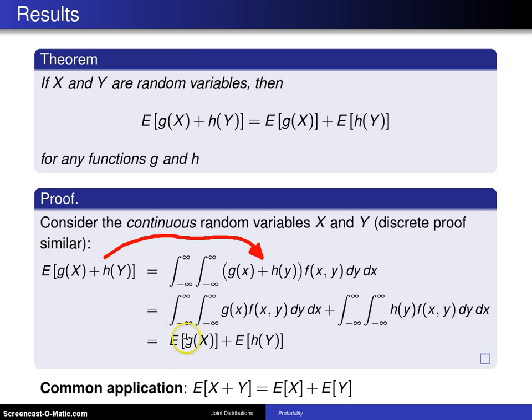This one, by definition, is the expected value of g of X. This one, by definition, is the expected value of h of Y because g of X is showing up right here and h of Y is showing up right here, and that completes the proof.